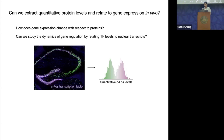We wanted to ask a simple question: extract quantitative protein levels and relate them to gene expression in vivo using single-cell technologies. I'm showing an immunofluorescence image of the mouse hippocampus stained with transcription factor CFOS, which indicates neuronal activity. We want to extract the heterogeneity and protein levels in brain tissue and transform that into a quantitative protein value. Coupled with RNA sequencing, we want to study the dynamics of gene expression relative to protein levels inside the nucleus where gene regulation occurs.